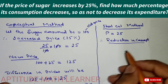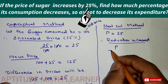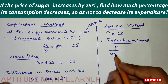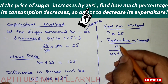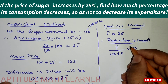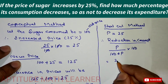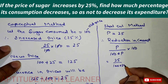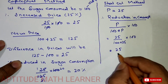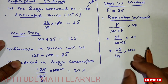The shortcut formula is: reduction in consumption equals p divided by (100 plus p), multiplied by 100. Here p represents the increase of 25 percent, 100 represents the old price, and multiplying by 100 gives the percentage. Putting in the value: 25 divided by (100 plus 25), multiplied by 100 — that is 25 divided by 125, multiplied by 100.